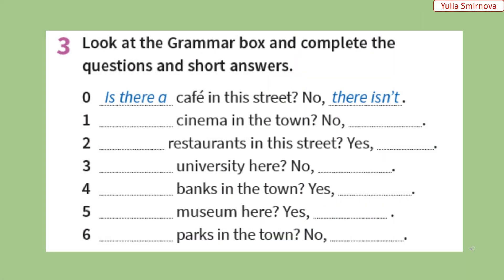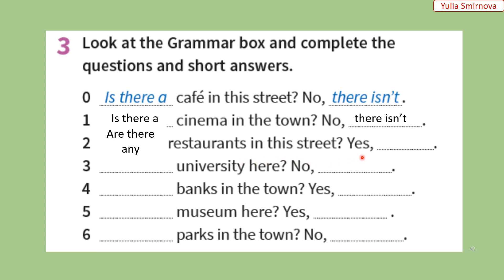Let's do exercise number three. Look at the grammar box and complete the questions and short answers. Користуючись правилом побудови питальних речень, доповніть питання та дайте короткі відповіді. 1. Is there a cinema in the town? No, there isn't. — Чи є кінотеатр у місті? Ні, немає. 2. Are there any restaurants in this street? Yes, there are. — Чи є на цій вулиці ресторани? Так, є. Ресторани — це множина, отже ми використовуємо 'are there any'.